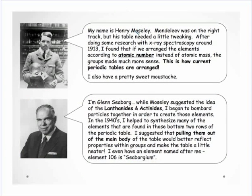Moseley is another well-known name you should know — make sure you highlight it and find a mnemonic device for learning these names. He did some research on Mendeleev's work around 1913 and realized that if we arranged elements by atomic number instead of atomic mass, some things that didn't make sense suddenly fell into place. As a reminder, atomic number is the number of protons — the number of positively charged particles in the nucleus.